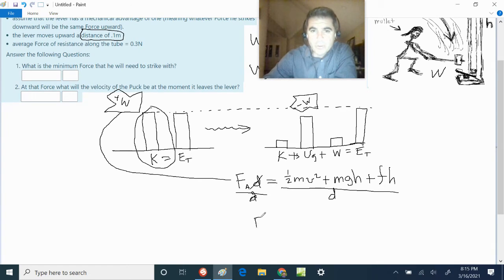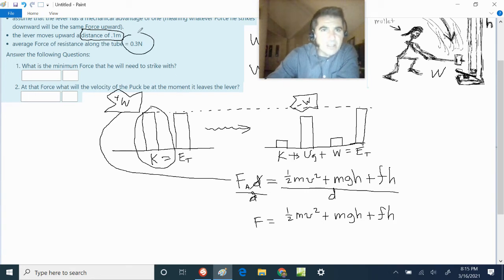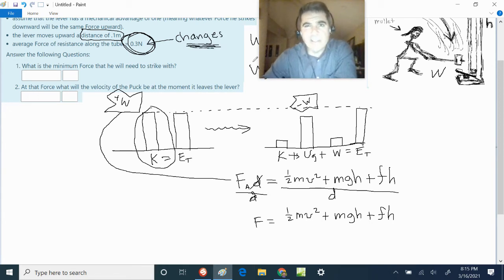The force will be equal to 1.5 MV squared plus MGH plus the amount of friction times H. By the way, that number is changeable. That number is the only number that changes with each time you restart the quiz. So, there's only three choices. I think it's 0.1, 0.2, 0.3,